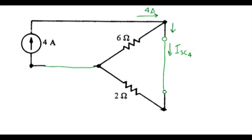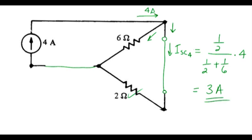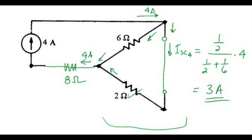Now we have a current divider with 4 amps coming in. I_SC4 is the conductance of interest — that's the 2 ohm resistor divided by the total parallel conductance, times the 4 amp source — and that works out to be 3 amps. Incidentally, if you put that series resistor back in, you see it doesn't change anything because the currents diverge and then rejoin, so this device has no contribution to the remainder of the circuit.